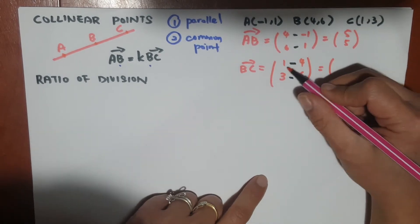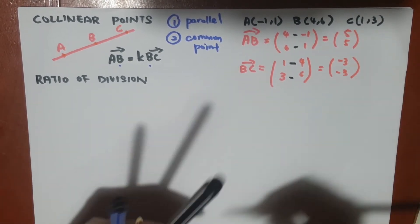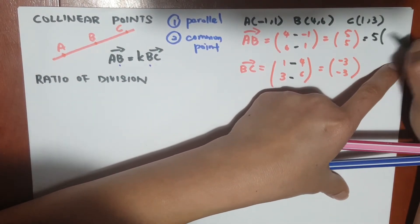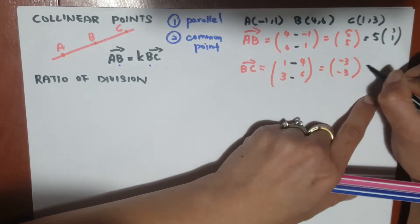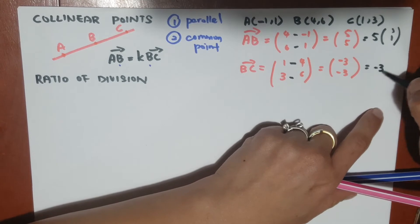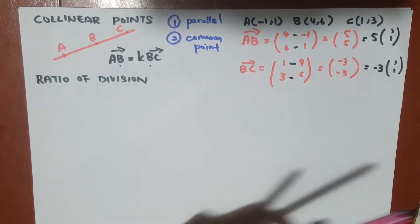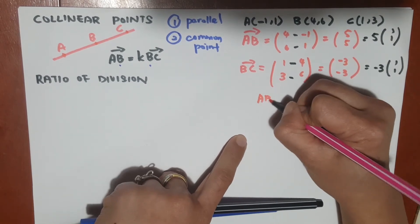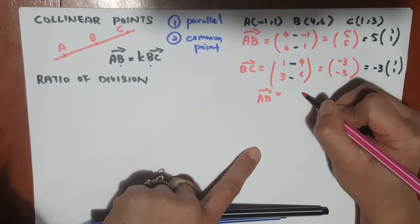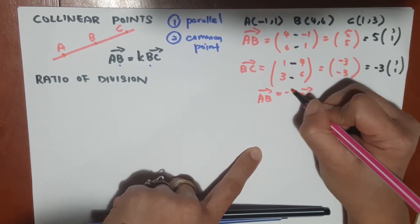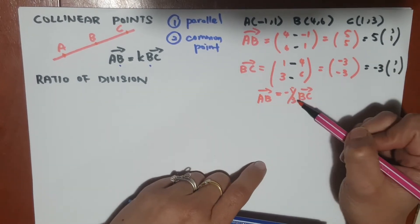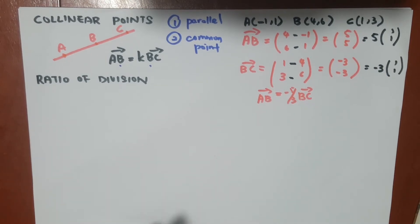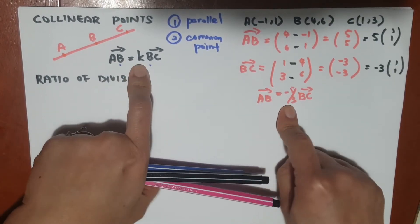If we compare these two, the first one, if we take out the 5, we can see this is 5 times the factor (1, 1). And for this one, if we take out -3, it's -3 times the factor (1, 1). So if we relate these two vectors together, AB will be BC times -5/3, because if we times -5/3 to this, we will get this vector. This has the form AB equals a constant number times BC.